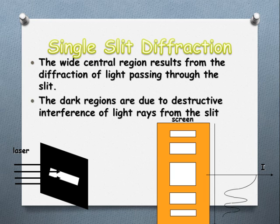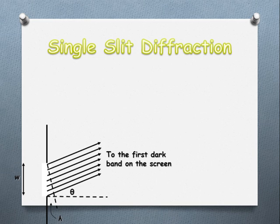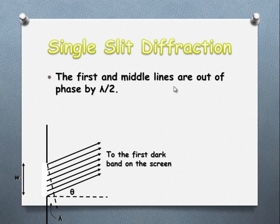The way we might try to explain this is by looking at the dark bands. As the light heads towards the middle band, in this instance, we're fitting a couple of wavelengths through, and light from the outer band and the middle band are out of phase by half a wavelength.